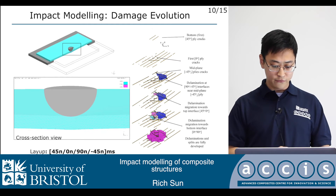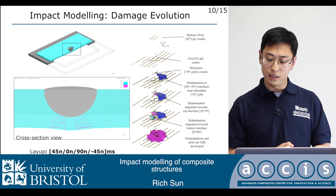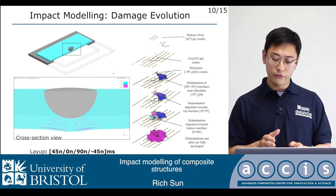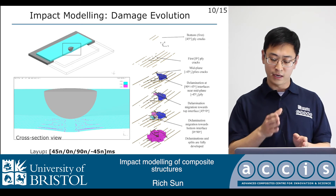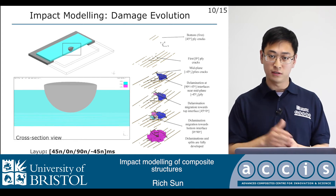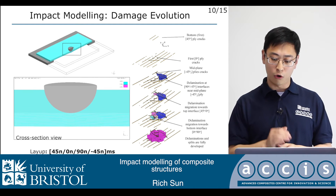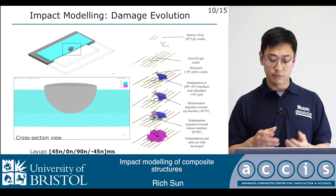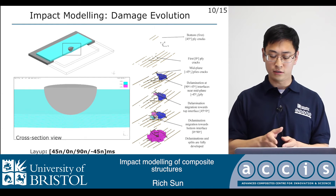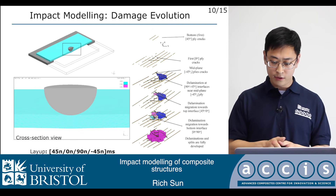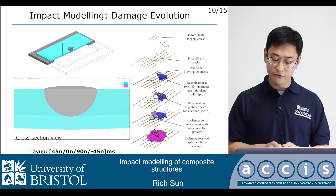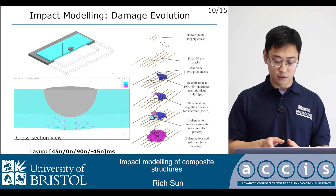If we slow down the simulation video, the first damage is a bottom ply crack due to high tension. Then more cracks appear around the mid-plane. With the help of shear cracks at the mid-plane, the first delamination appears around the mid-plane, where maximum interlaminar shear stress is present. This delamination then migrates to upper and lower interfaces and further propagates as the load increases.